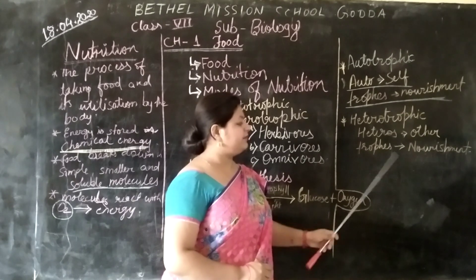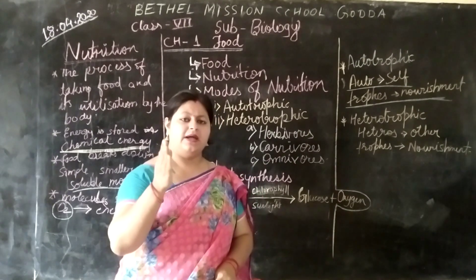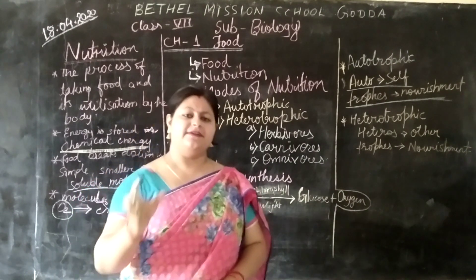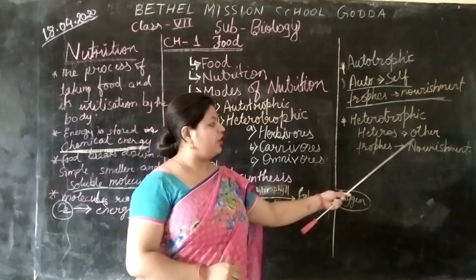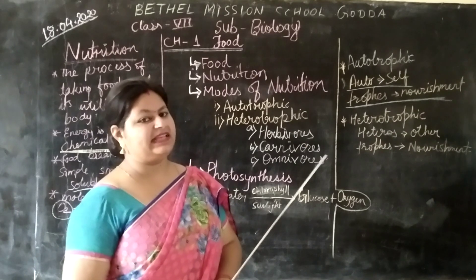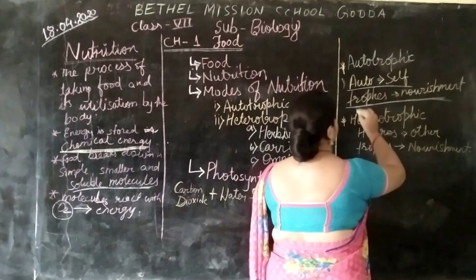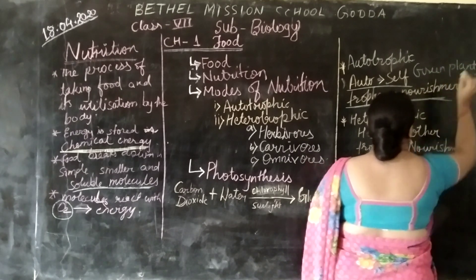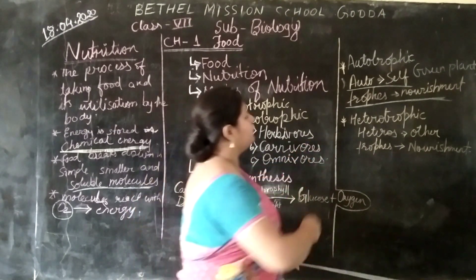Heterotrophic means 'other' and trophic means nourishment. Heterotrophic nutrition is the type of nutrition in which plants, animals, and human beings depend on other organisms for their food. Heterotrophs depend on others for their food. Examples of autotrophs are green plants, which can also be called producers. Heterotrophs can be termed as consumers.